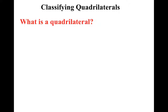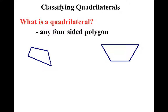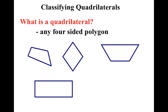A quadrilateral is a type of polygon. So what is a quadrilateral? It's any four-sided polygon — it has to have only four sides. Notice a few different kinds of quadrilaterals. They're all closed, they all have four sides, and they all have straight sides.